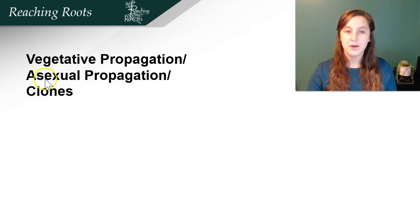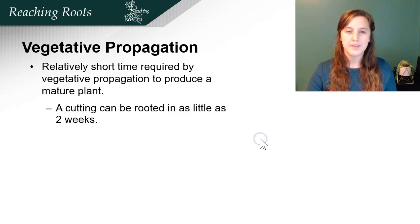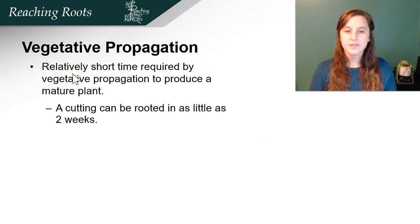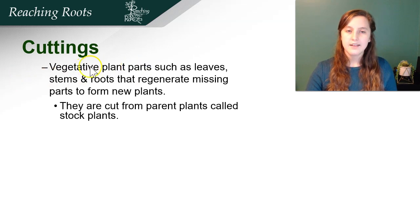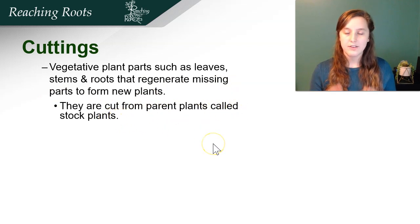Now we're going to switch over to asexual propagation, or vegetative propagation, or the production of clones — all these words can be used synonymously. This could be done in a relatively short amount of time to produce a new plant. A cutting can be rooted in as little as two weeks, so you can create a new plant quite rapidly. Cuttings are vegetative plant parts such as leaves, stems, or roots that regenerate missing parts to form new plants. They are cut from parent plants called stock plants.